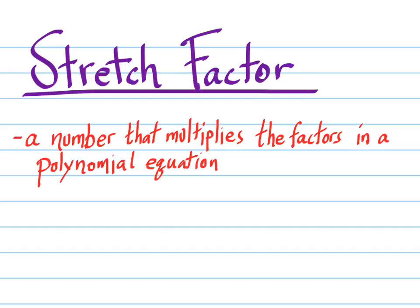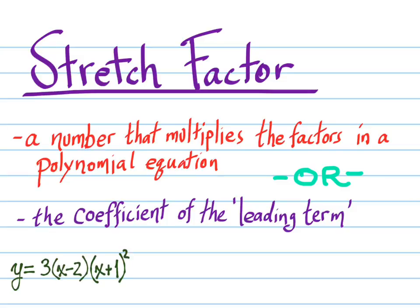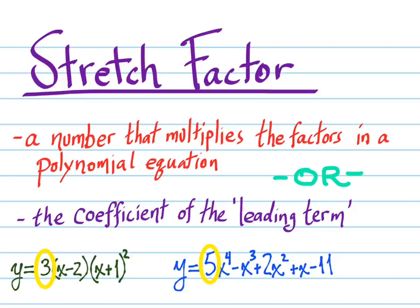If the polynomial is written in standard form, which is quite common, the leading coefficient of that polynomial is actually the stretch factor. So you might see it in a couple of different ways depending on how your equation looks. For example, in an equation in factored form, the leading number is the stretch factor, whereas in standard form, it's the leading coefficient where the stretch factor shows up.